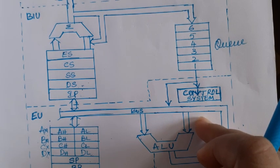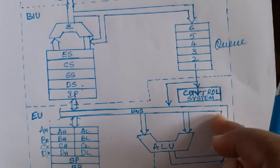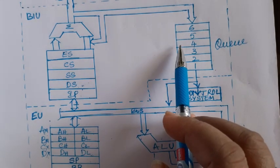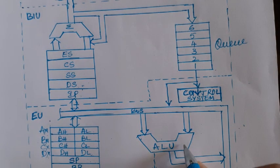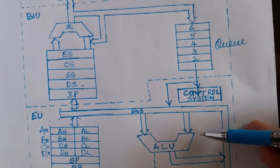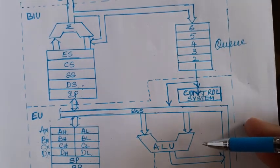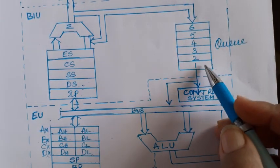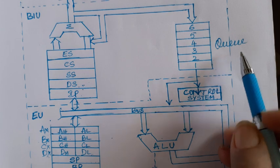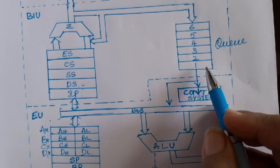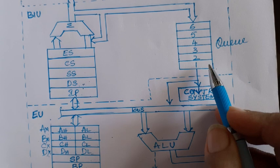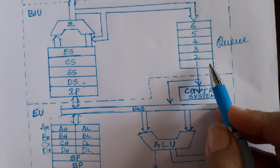This increases the throughput of the processor — that is, the number of instructions executed per second is increased. One unit is fetching instructions and the other unit is executing them; two units working together is known as pipelining. This pipelining is possible because of the six-byte instruction queue present in the Bus Interface Unit. It is six bytes because an 8086 instruction can be a maximum of six bytes.